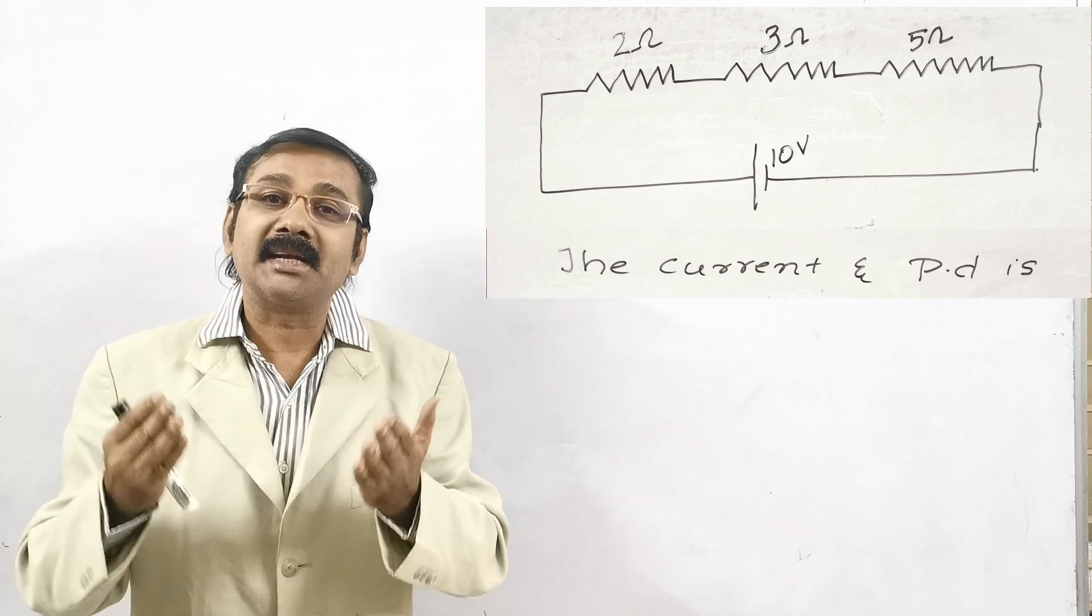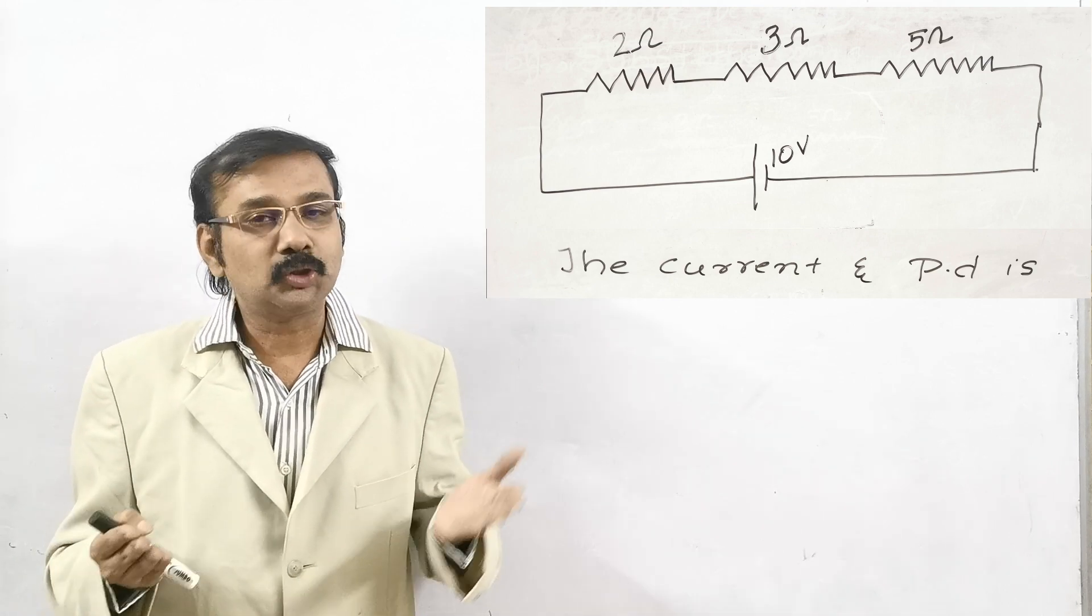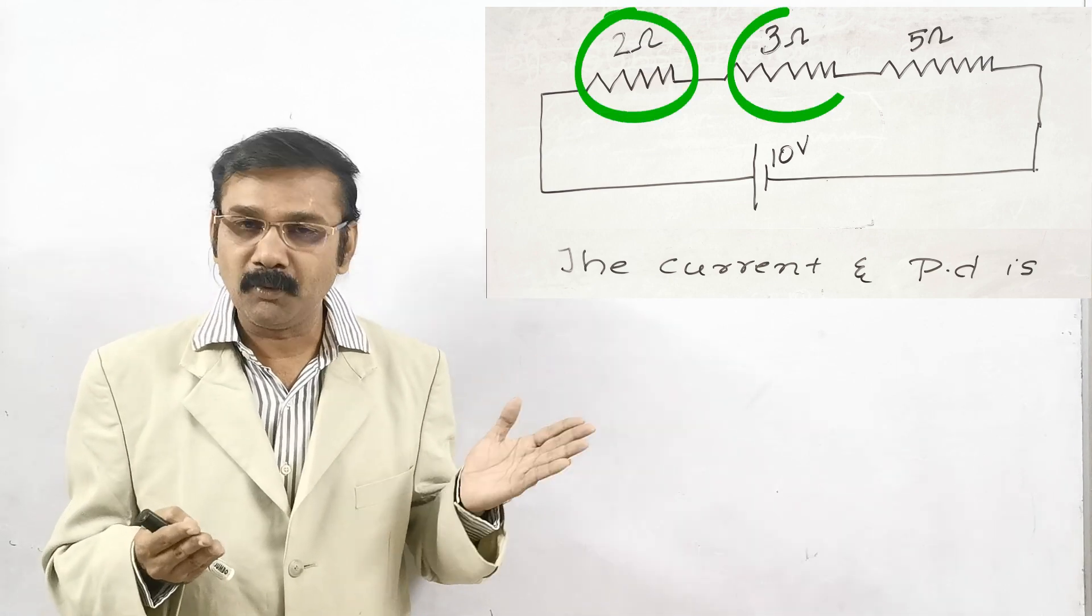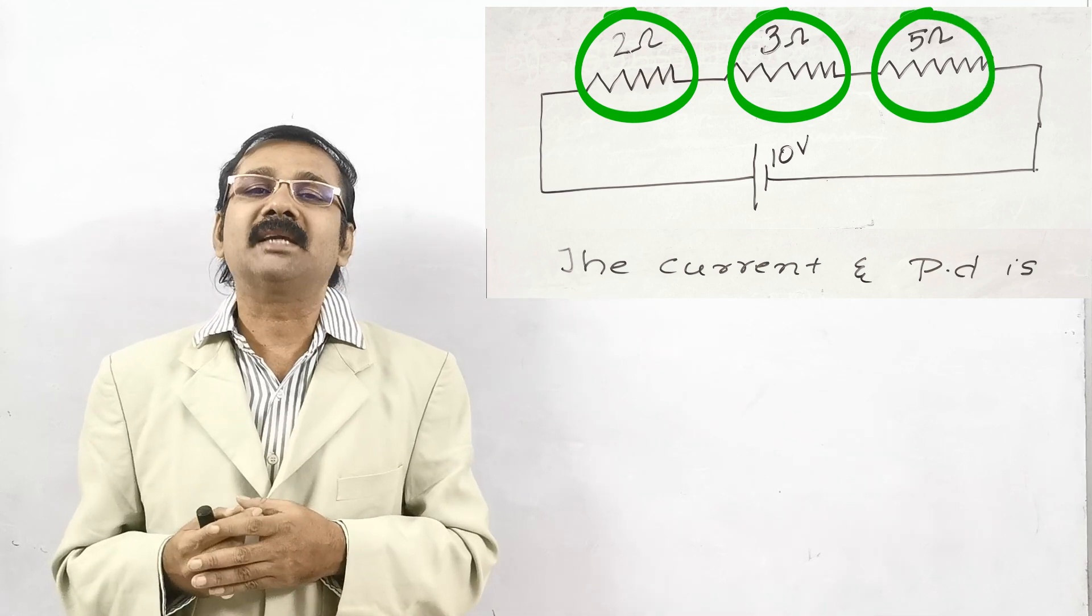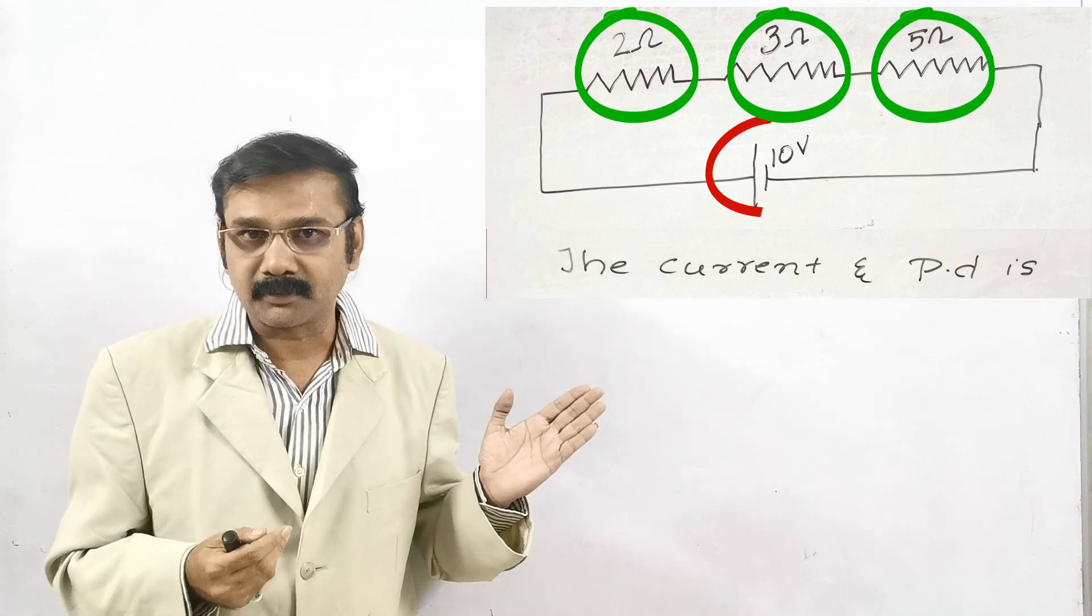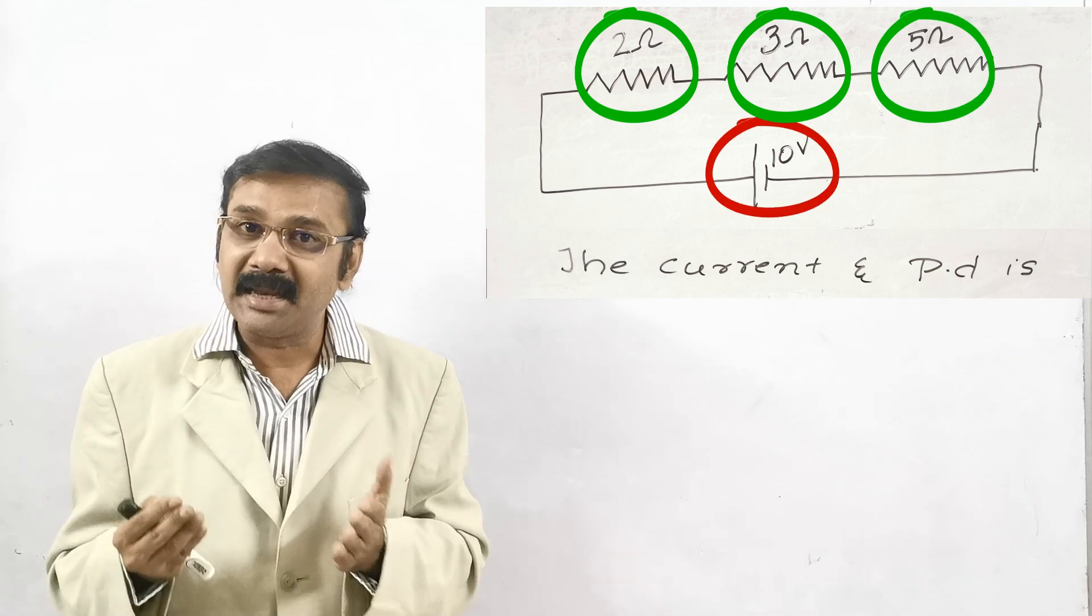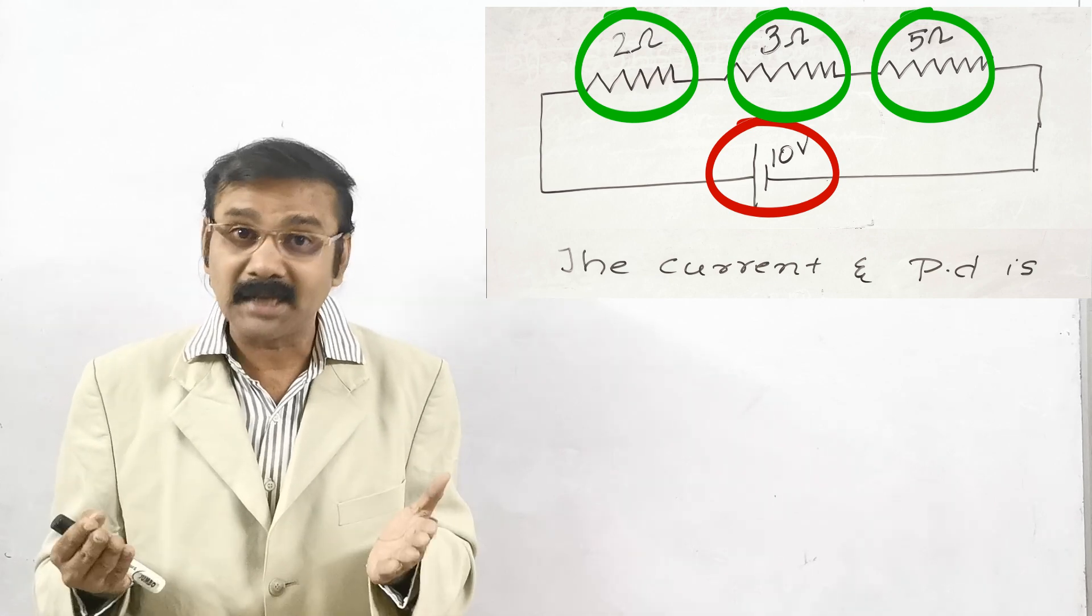There are three resistances which are connected in series. There are 2 ohms, 3 ohms and 5 ohms respectively which have been connected to a 10 volt battery. All the resistances have been circled and even the voltage has been circled.